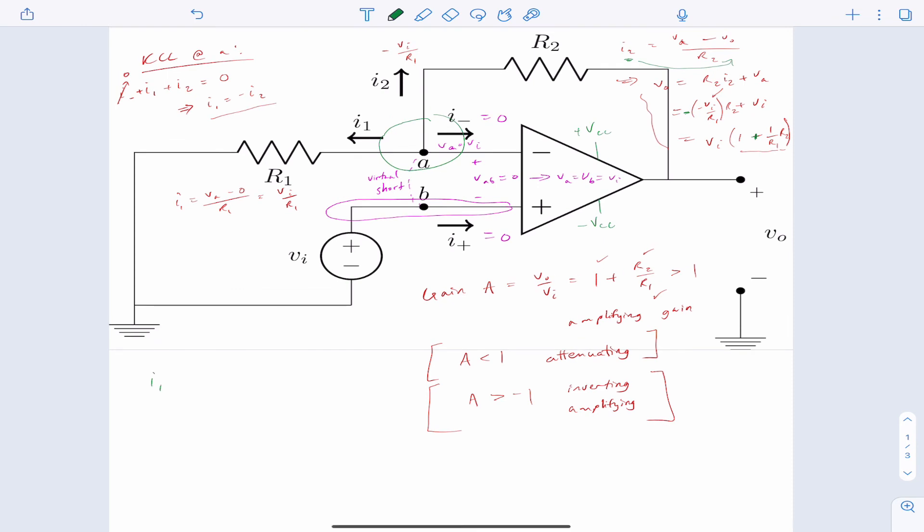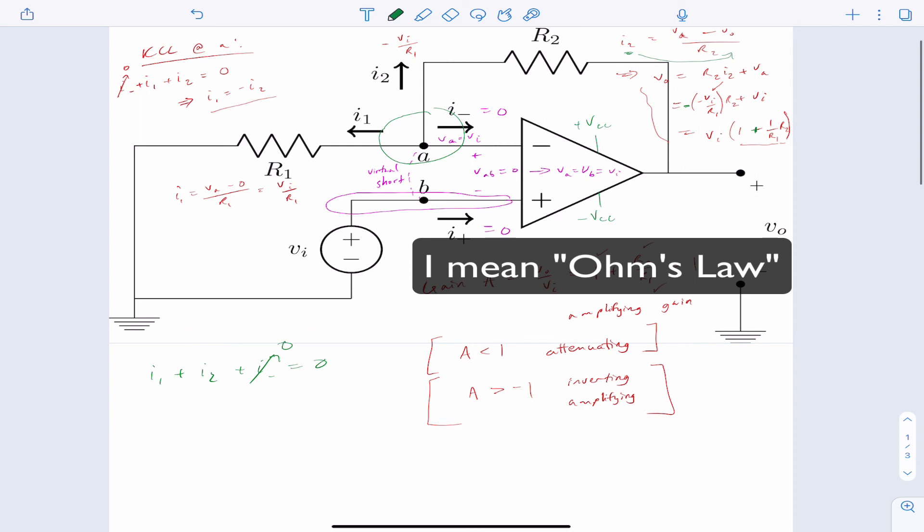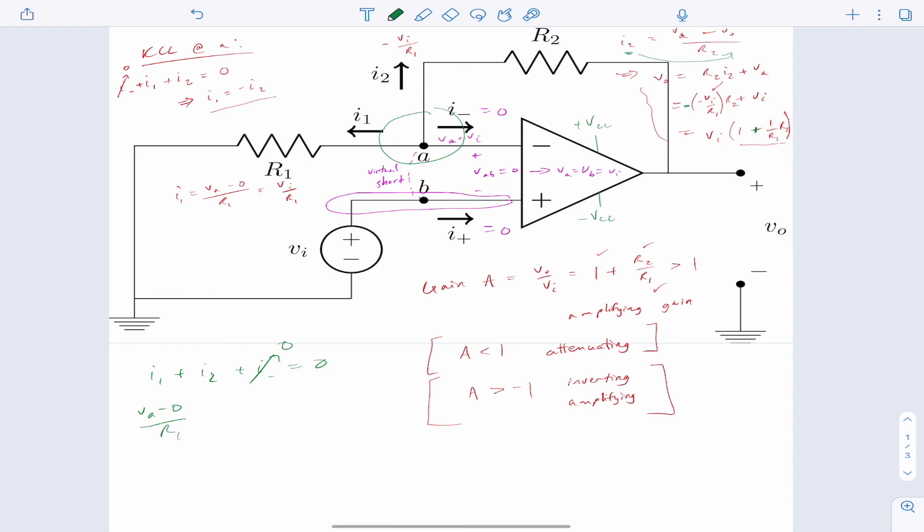So we already have this KCL equation, I1 plus I2 plus I minus equals zero. Well, we ignore that. And then we do Kirchhoff's voltage law, where I1 is VA minus zero over R1. And I2 is VA minus VO over R2.